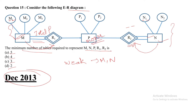Now, P is the owner entity. Whenever a weak entity is given, another entity is the owner entity. The owner entity has its own key attribute, but in this diagram no key attribute is mentioned. So you can choose any one — I am taking P2 as the key attribute of P, and the key attribute is indicated by an underline.